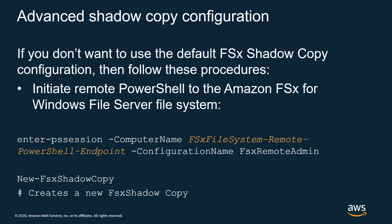In the last demo, I showed you how to set up shadow copies with Amazon FSx for Windows File Server and highlighted documentation on how to change some default configurations. If you want to change default shadow copy settings, you would initiate a remote PowerShell session to the Amazon FSx file system using Enter-PSSession with the dash-ComputerName parameter — paste in the FSx Remote PowerShell endpoint — and use the FSx remote admin configuration. This opens a PowerShell window that lets you run PowerShell commands directly on the Amazon FSx for Windows File Server.